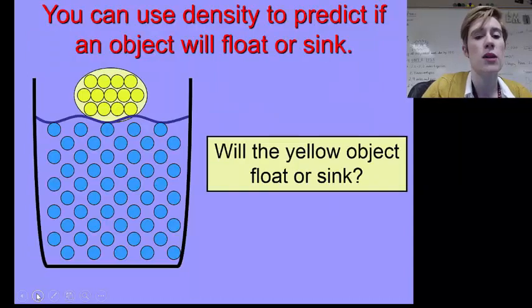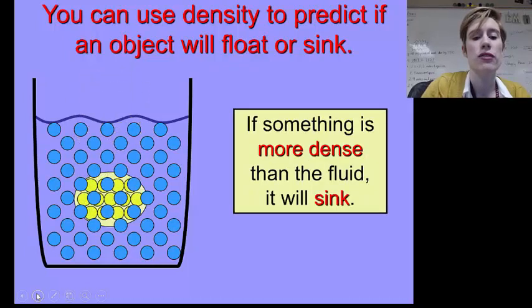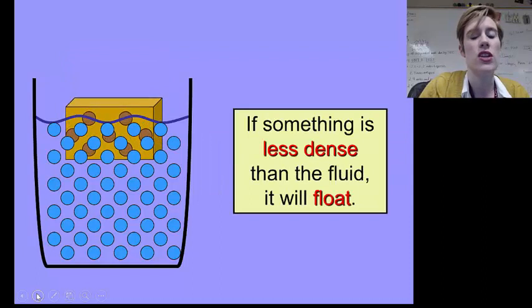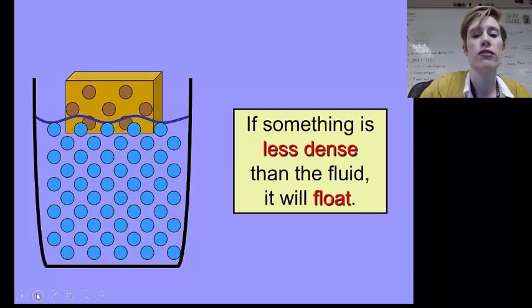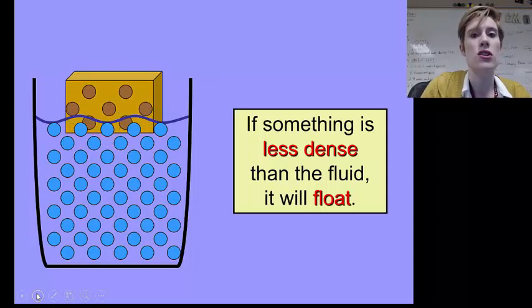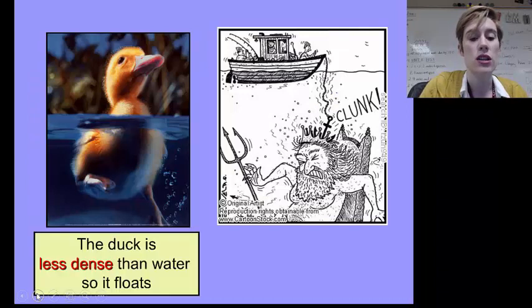We can use density to predict if objects will float or sink. So you can predict that this yellow object is going to sink because it's denser than the water, and so it will sink down to the bottom. Objects that are less dense than water will just sit on the top of the water or kind of float up and down in the water. Water is the typical object that we use to compare whether objects will sink or float.